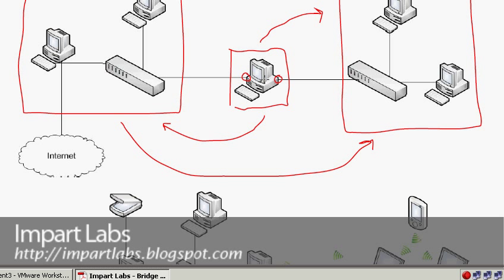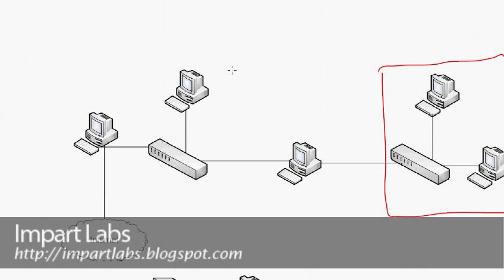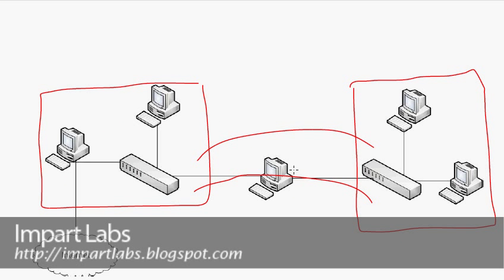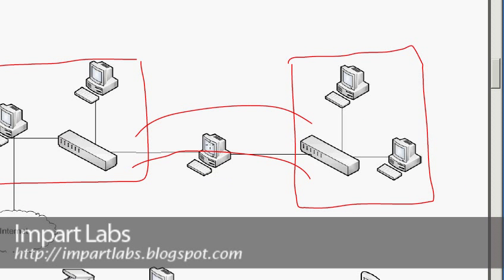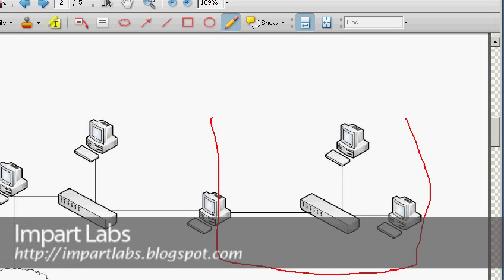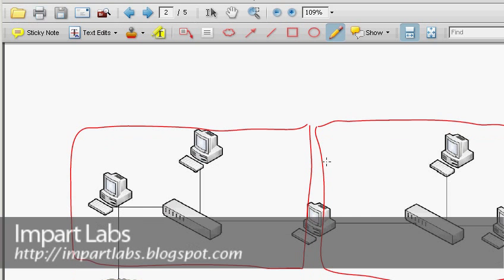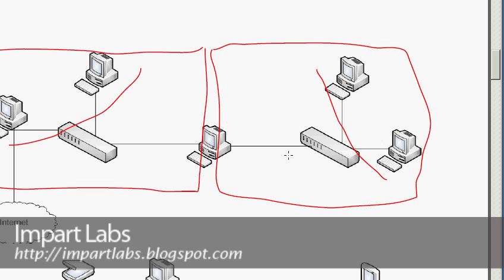Creating a bridge would make it possible for these two networks to communicate easily. Without a bridge, this computer would be able to communicate with these two networks, and this computer as well, but these two computers here won't be able to communicate with the other networks, and in reverse it won't be possible either.